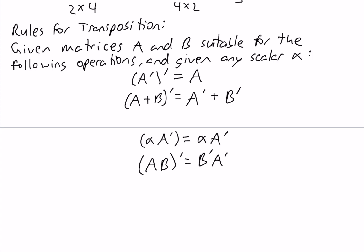This last rule is interesting. Notice that on the left side of the equal sign we have A and then B, and once we take the transpose, B comes first — so now it's B transpose times A transpose.